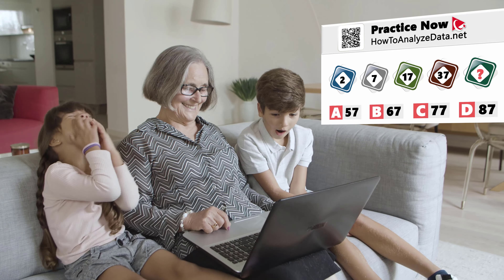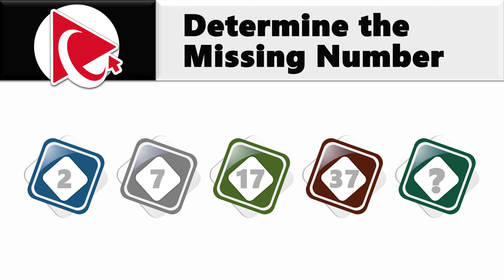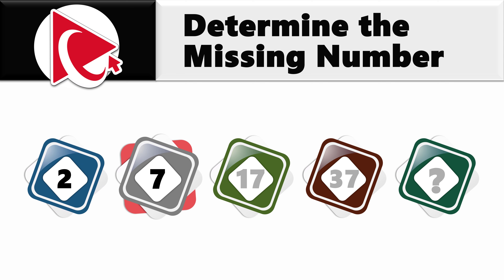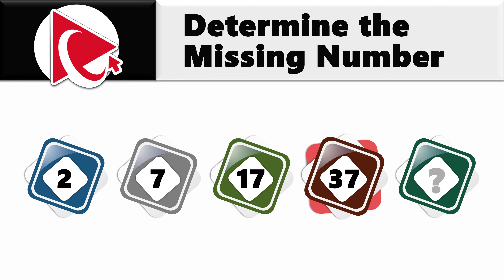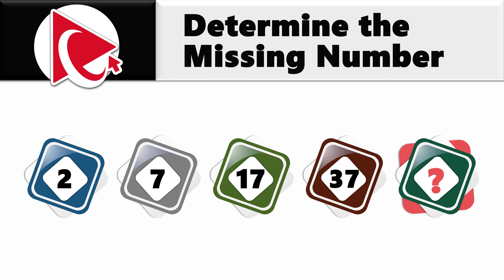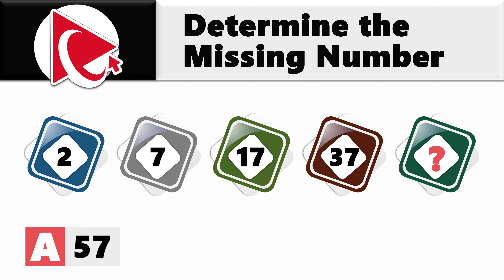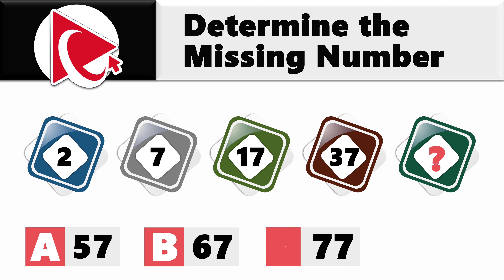You're presented with a sequence of numbers, and you need to determine the missing number. The numbers are 2, 7, 17, 37, and then comes the missing number, which you need to calculate and select out of four possible choices: Choice A, 57; Choice B, 67; Choice C, 77; and Choice D, 87.